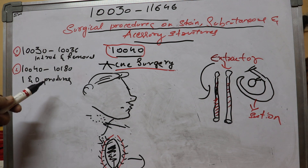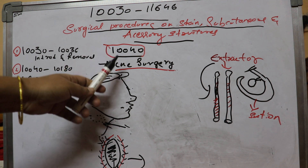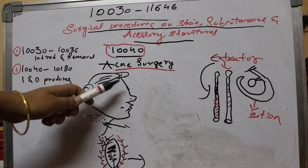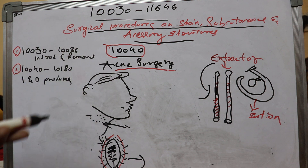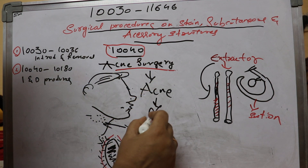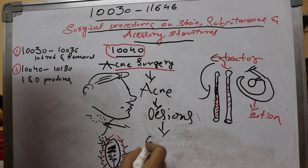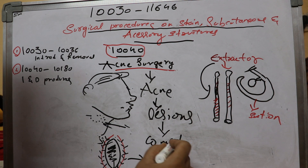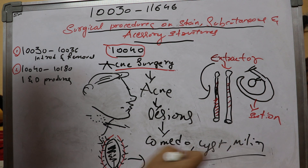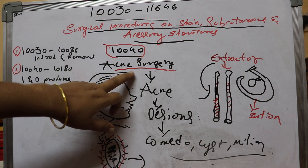In this session I will explain about CPT 10040, which is the acne surgery. Acne refers to lesions — lesion-like structures. A few of the lesions are comedos, cysts, and milia. These lesions are removed in acne surgery.